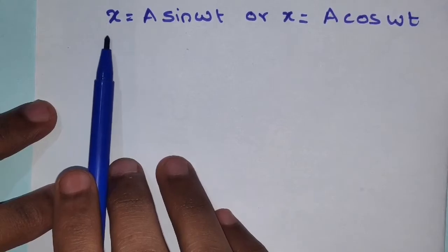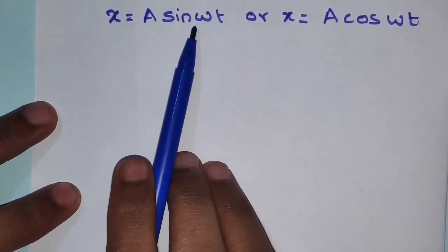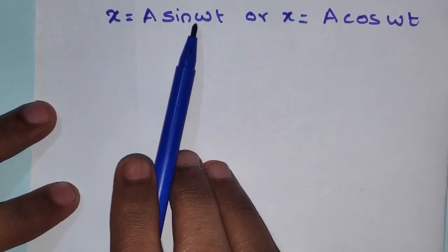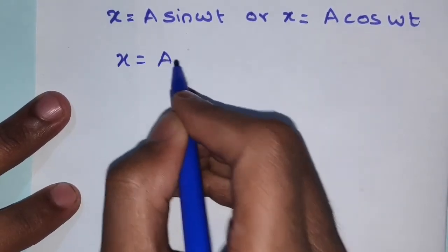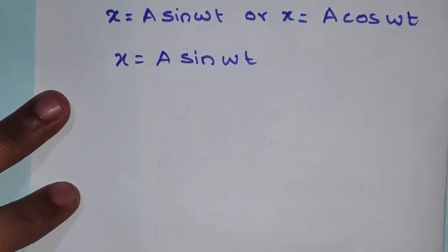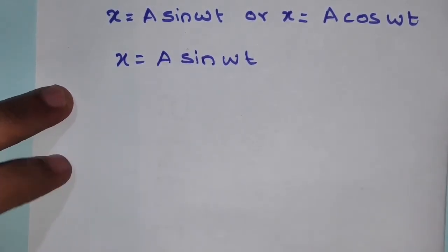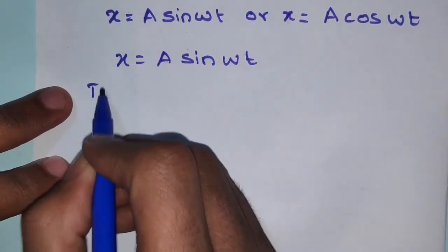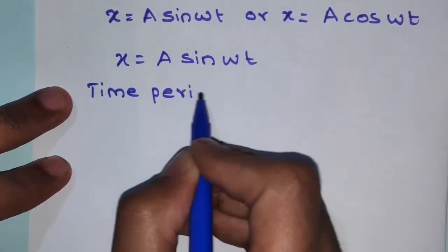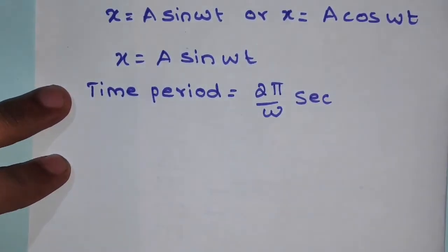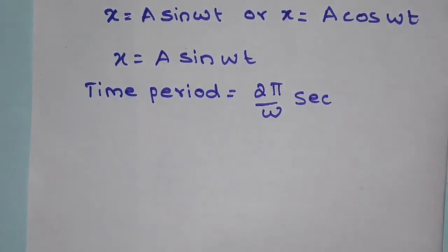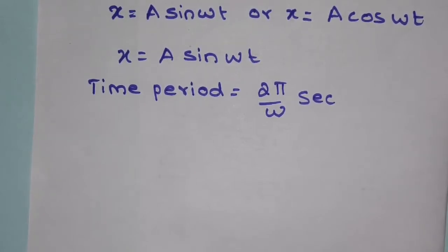Here x is the displacement, a is the amplitude, and ω is the circular frequency. Now let us consider x = a·sin(ωt). The time period for this will be 2π/ω seconds — that is, the motion will repeat itself after 2π/ω.